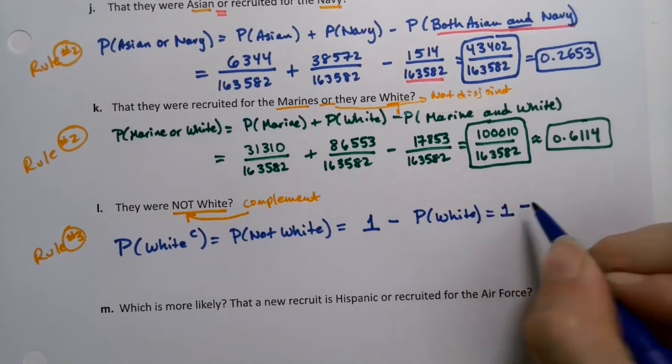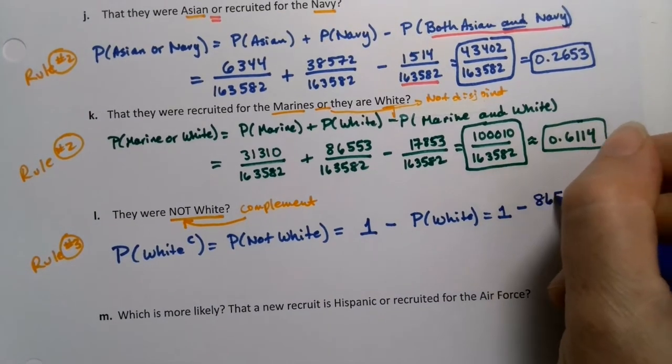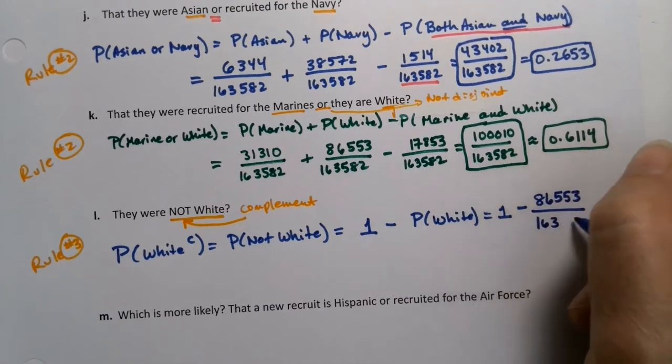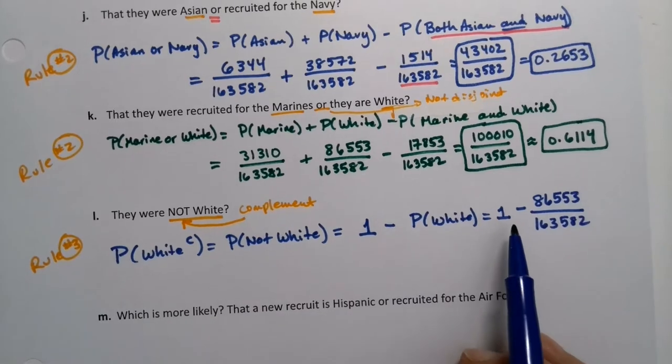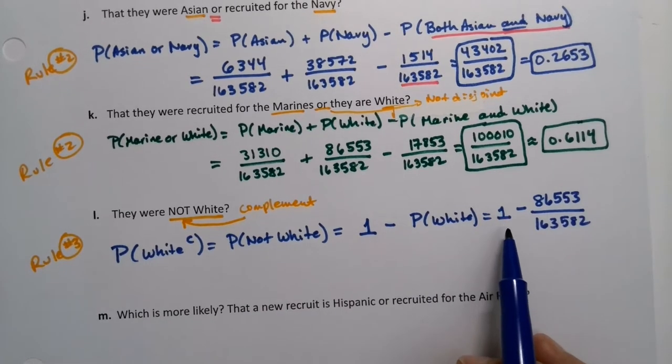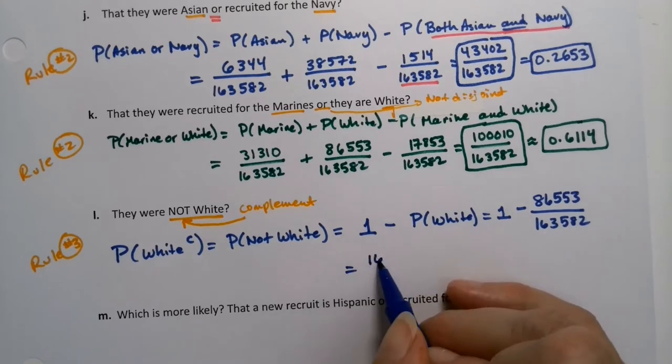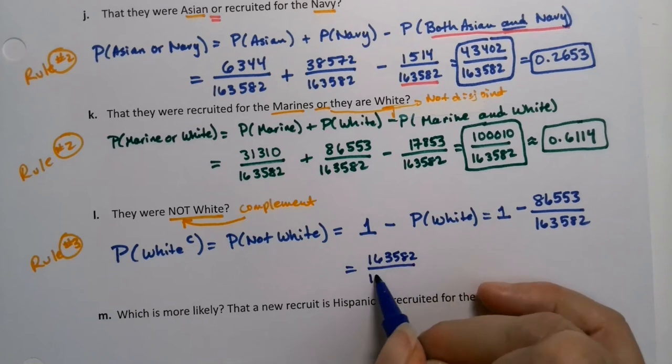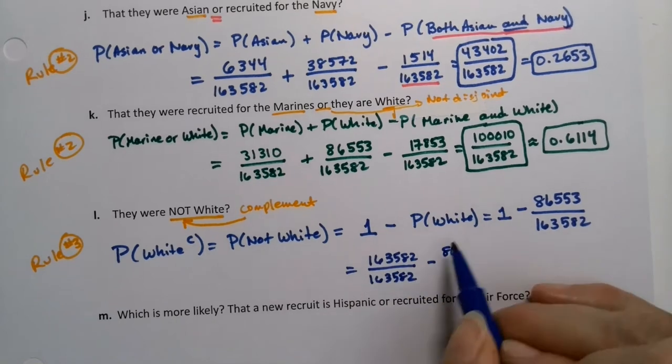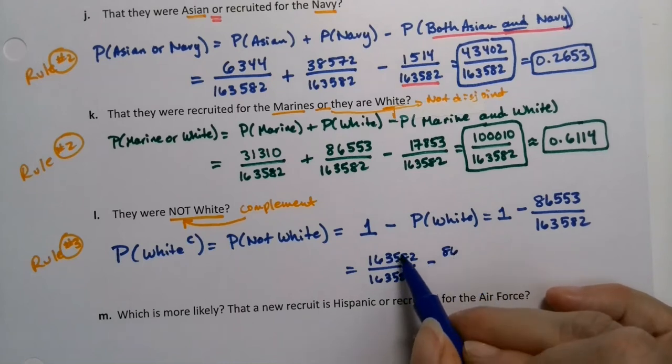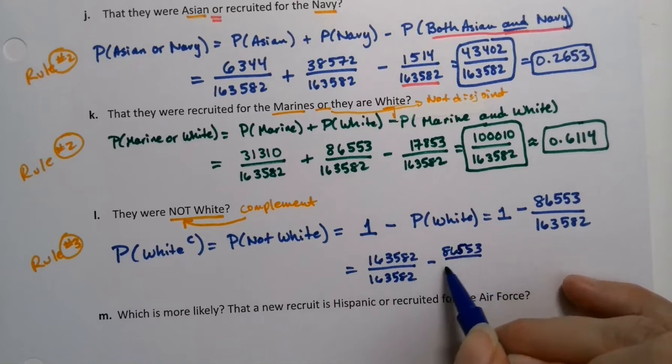That would be one minus - and then for white, it was 86,553. Now remember the trick. This one is any number over anything, right? You can put any number over itself. So I'm going to write it out for you guys: it's 163,582. You don't have to write this, I generally don't, but just so you can see it, you're changing that one into 163,582 over itself. And that way they have the same denominator and you can combine them together.